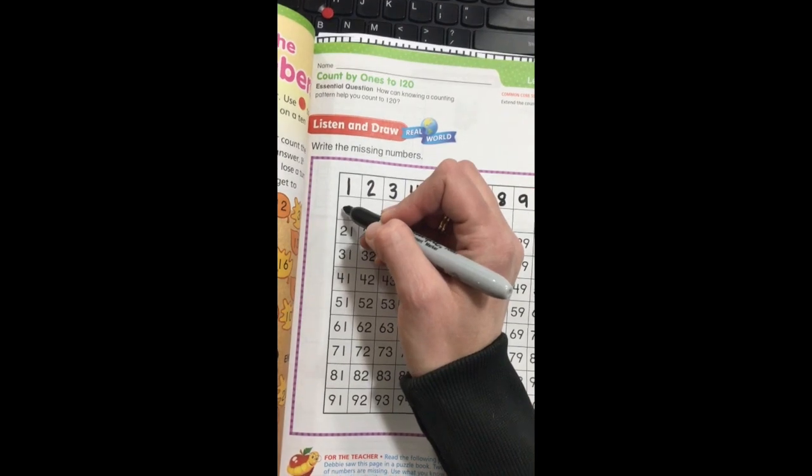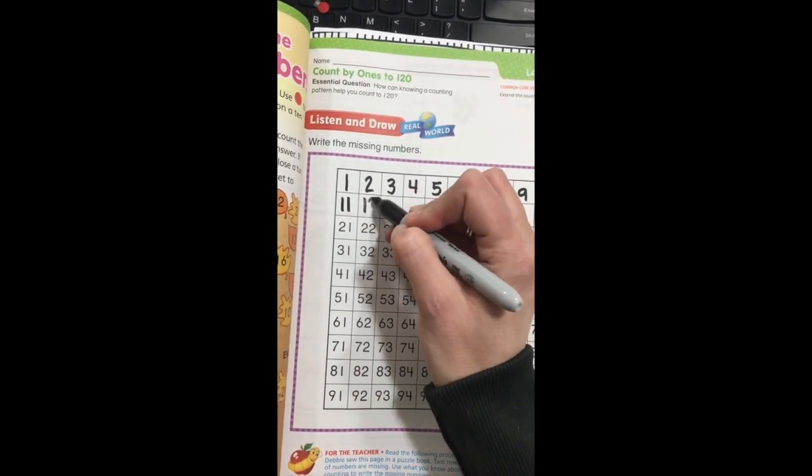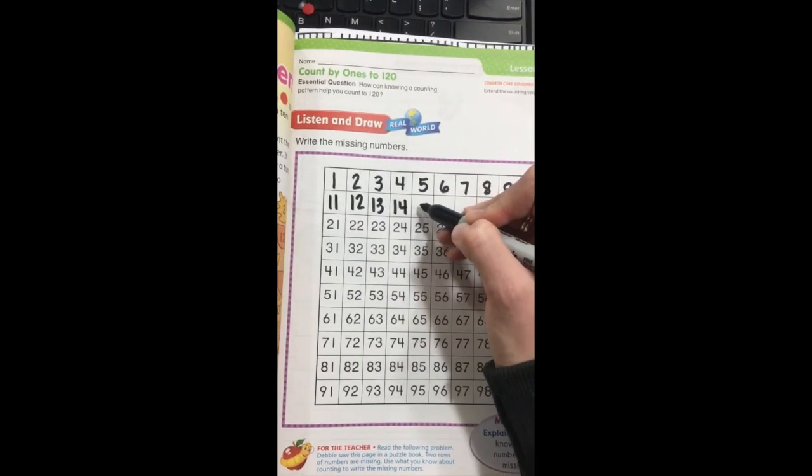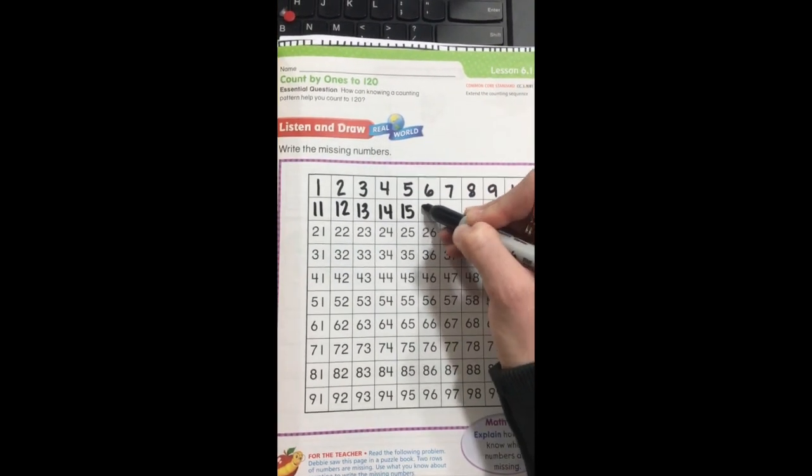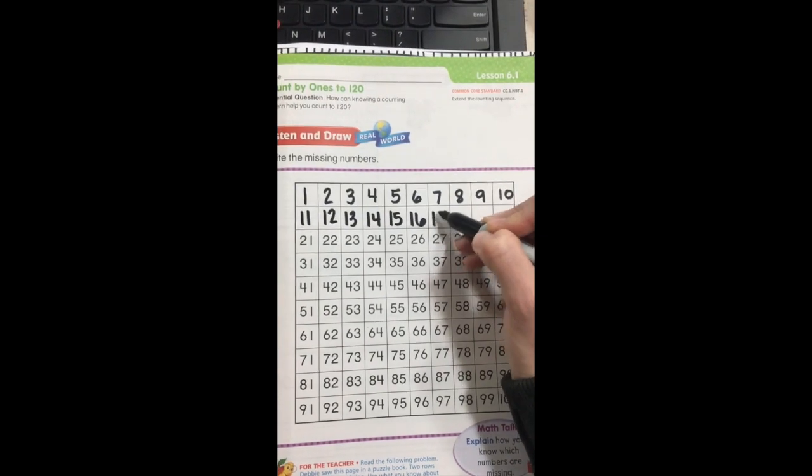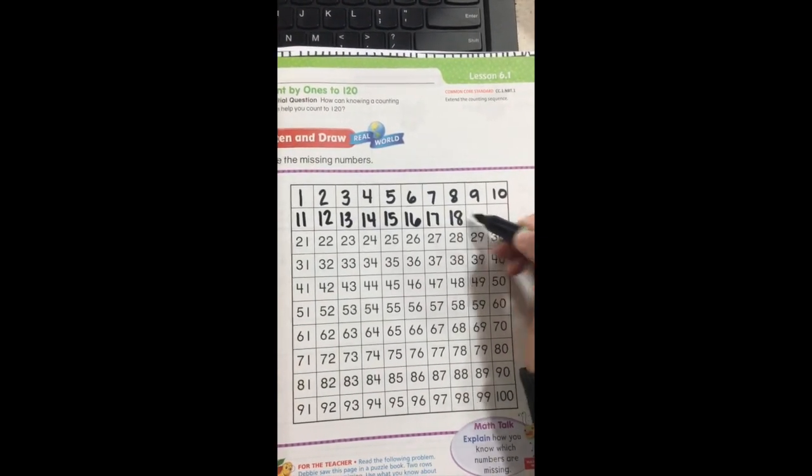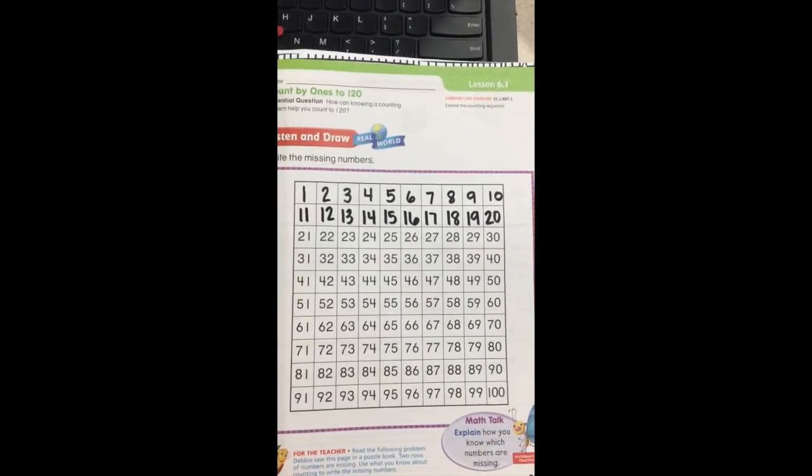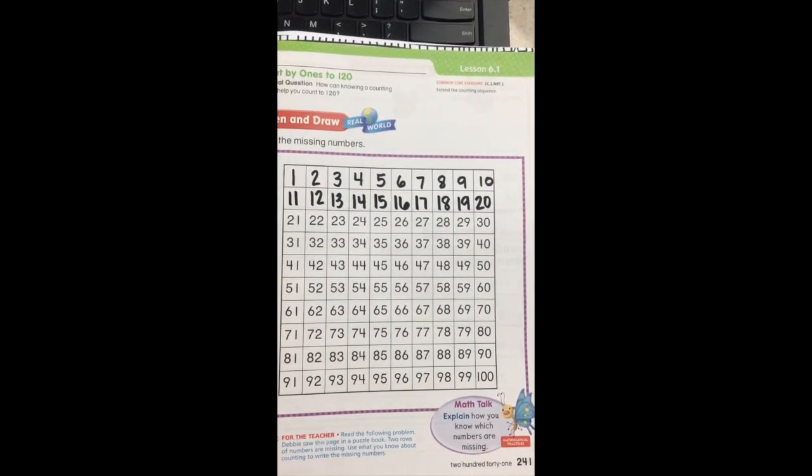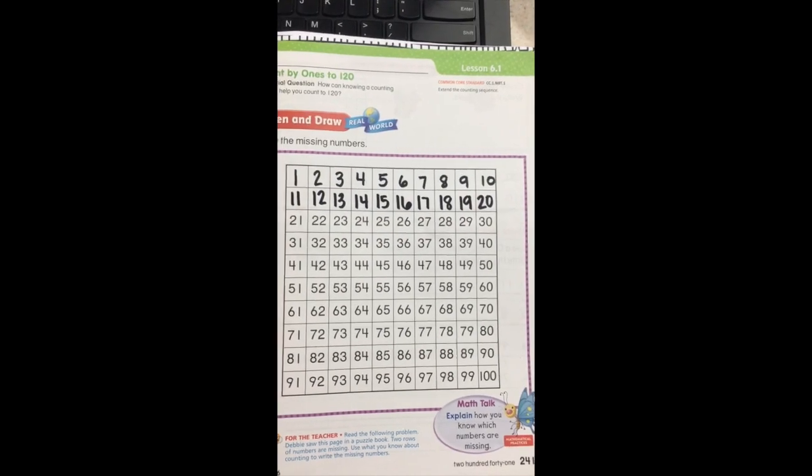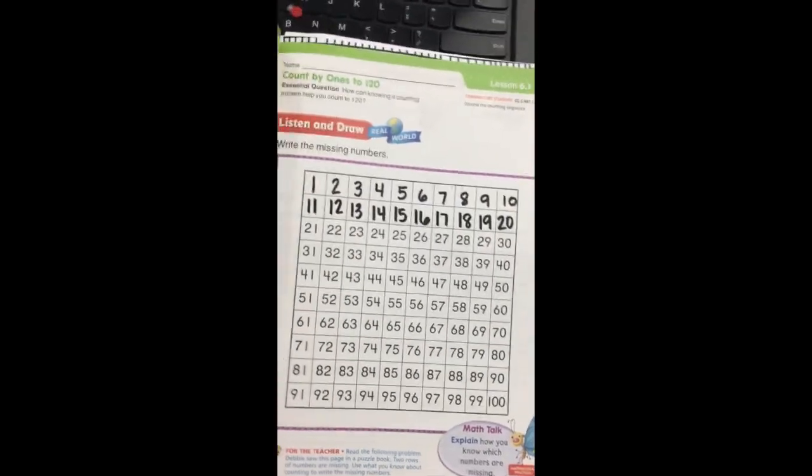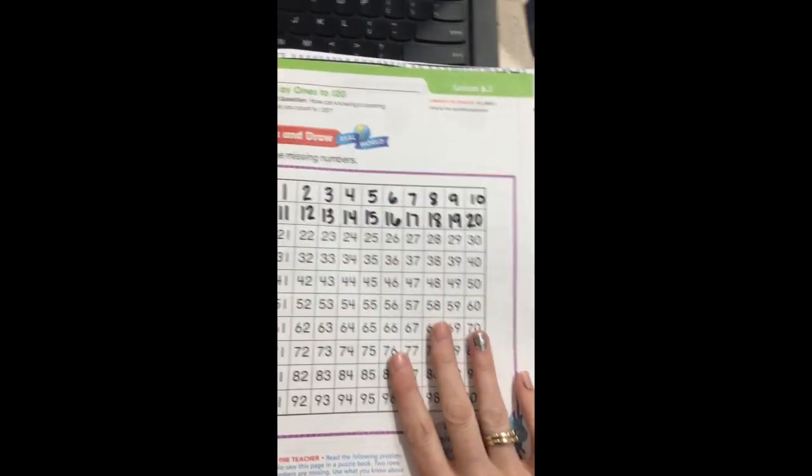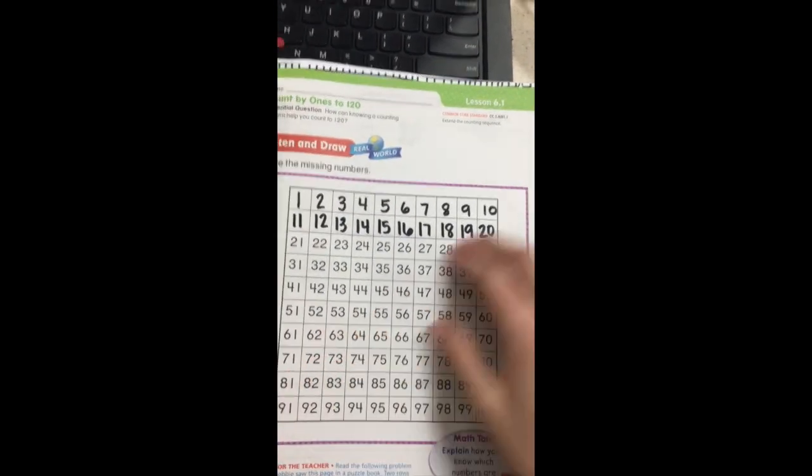Okay, so we're going to come down here to the second row and we're going to start. 11, 12, 13, 14, 15, 16, 17, 18, 19, 20. Do the order of those numbers ever change? No, they don't. You are right, they do not change. Okay, so we can always figure out on a puzzle like this which numbers are missing.